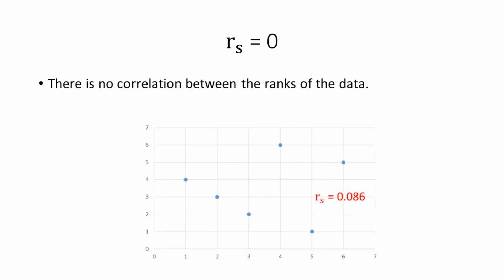However, you might get certain scatter graphs where there might not be any form of correlation, or there might not be any type of relationship. In this case, the Spearman's rank will equal 0, and as you can see over here, these points on the scatter graph don't have any relation to each other.